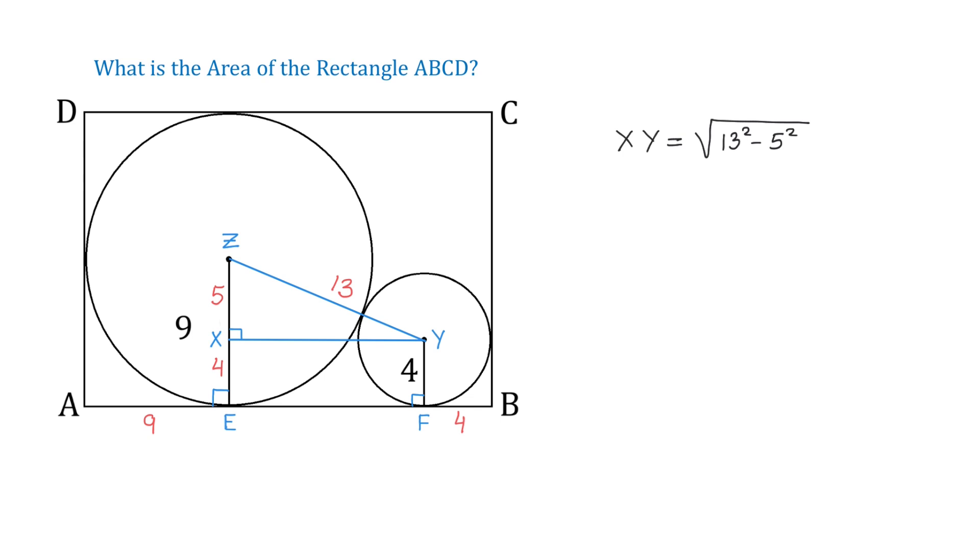So, XY equals 12. Then, because XY is equal to EF, then EF is also 12. And now, to find the length AB, we will add 9, 12, and 4, and get 25.